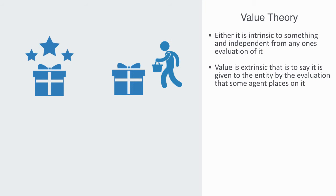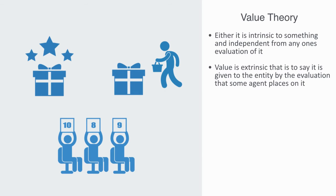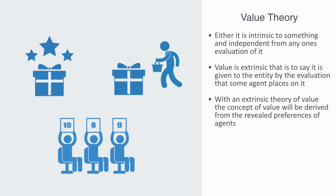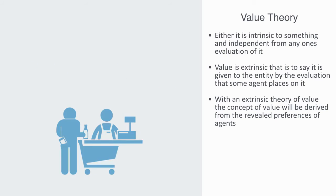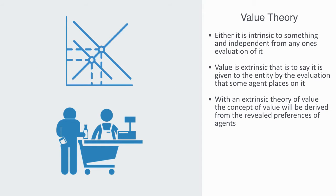that is to say it is given to the entity by the evaluation that some agent places on it. Standard economics uses an extrinsic theory of value. This concept of value will be derived from the revealed preference of agents. Standard economic agents have clear preferences. This preference reveals their values. In choosing one thing over another, the utility of that will be revealed to the economist. In economics, utility is a measure of preference over some set of goods and services.